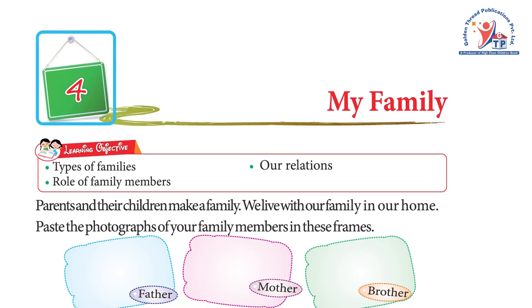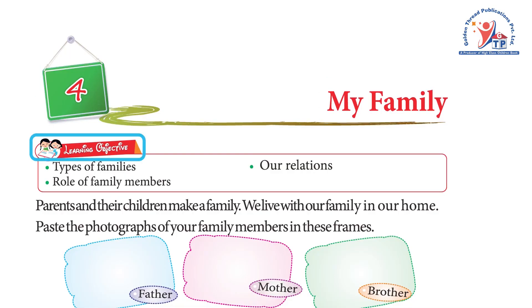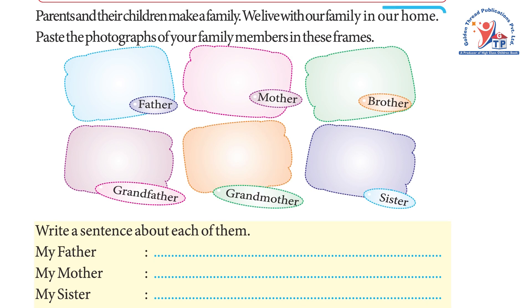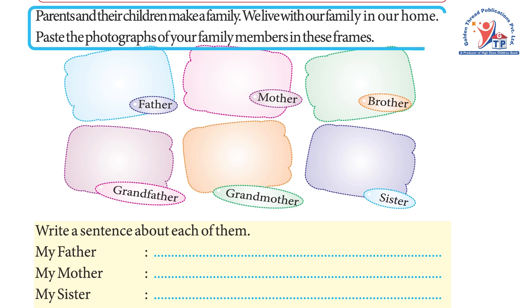Chapter 4: My Family. Learning objective: types of families, role of family members, our relations. Parents and their children make a family. We live with our family in our home. Paste the photographs of your family members in these frames.